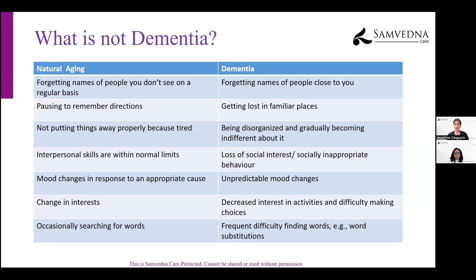Naturally, as we age, fatigue is part of the aging process and it's fine to sometimes not want to tidy up. But a differentiating sign in dementia is when someone becomes very disorganized and has difficulty making decisions about how to organize things. They become very indifferent to this — almost as though they don't realize their disorganized way of living is a problem. This gets picked up by family members because it is very different from how the person used to be.